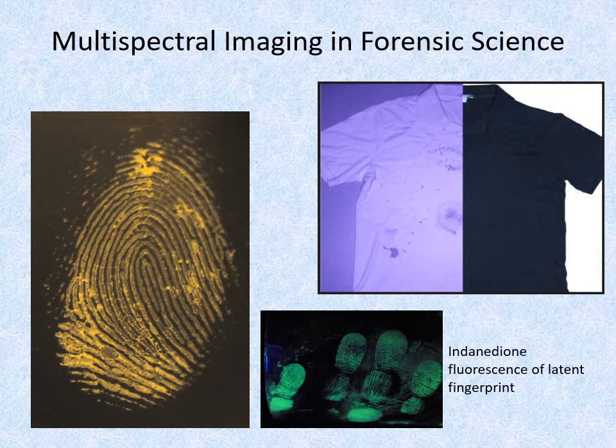Similarly, invisible fingerprints, known as latent prints, are made visible in forensic labs by reacting fluorescent dyes with superglue vapour on the object and then shining an ultraviolet light. The fluorescent image obtained is then photographed for matching against the prints of the crime suspects.